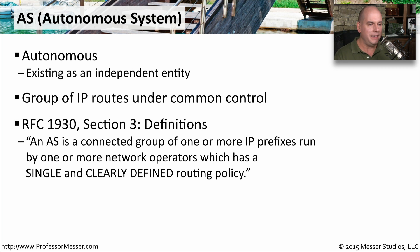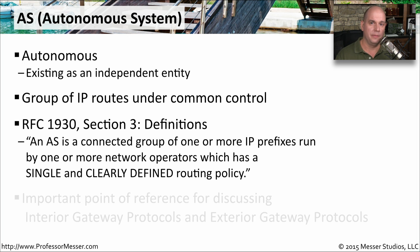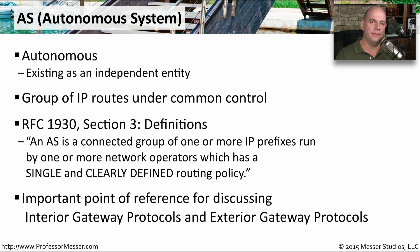If we look at RFC 1930 under Section 3, an AS is a connected group of one or more IP prefixes run by one or more network operators, which has a single and clearly defined routing policy. If you start working with routers and have your own network, there is always a very clear delineation between what is your network and what is someone else's. We will define interior and exterior gateway protocols based on what the autonomous system might be.